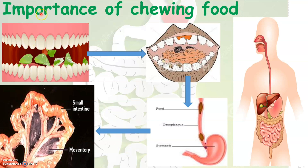Let us see what is the importance of chewing food before we swallow it. When we chew food in our mouth, the large particles of food are broken down into small food particles, as you can see in the pictures. These smaller food particles will then go into the stomach through the esophagus. When they reach the stomach, these smaller food particles are again broken down into simple soluble substances.